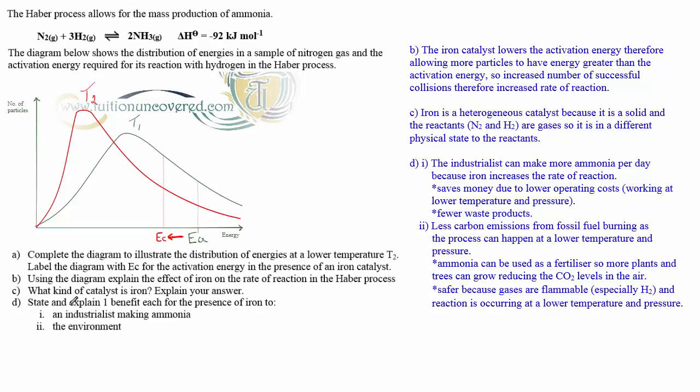Part C, what kind of catalyst is iron? Explain your answer. Well, iron itself is a solid catalyst. The reactants are gases. So iron is a heterogeneous catalyst because it's solid and the reactants, nitrogen and hydrogen are gases. So it's in a different physical state to the reactants.